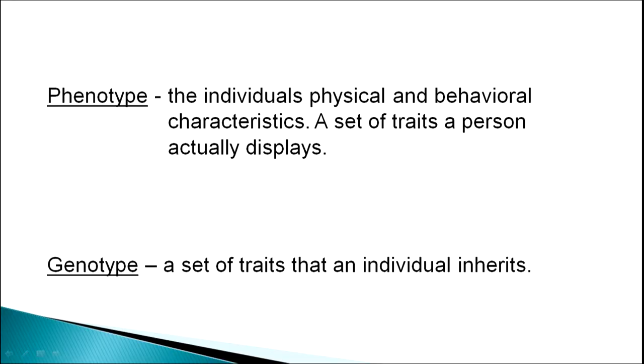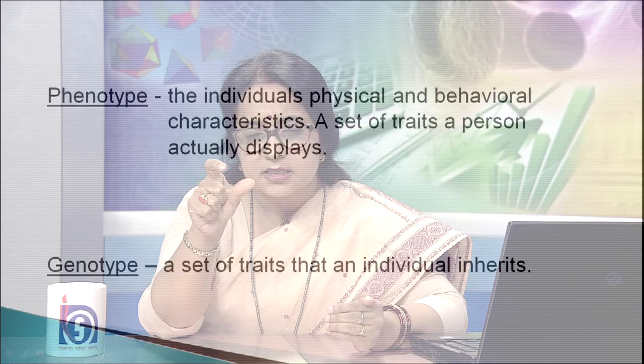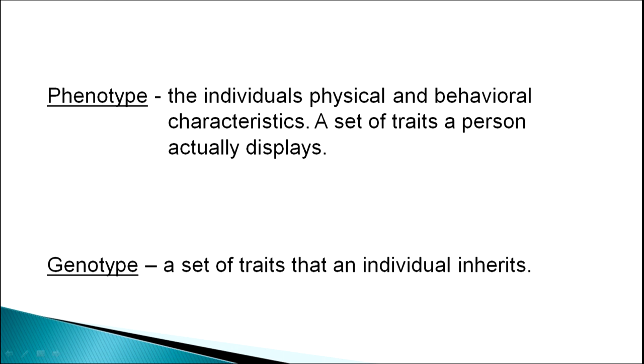Those characters which are visible are known as phenotype. Phenotype is the individual's physical and behavioral characteristics — a set of traits that a person actually displays. It may not be genetically identical, but the traits which are evident are considered as phenotype. Genotype is a set of traits that an individual actually inherits — that is, their genetic composition. Phenotype represents outward appearance, while genotype is the inbuilt genetic composition of an individual.